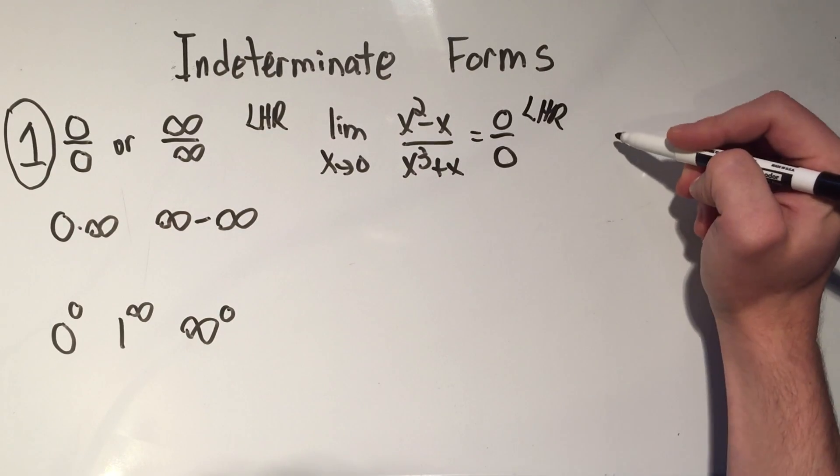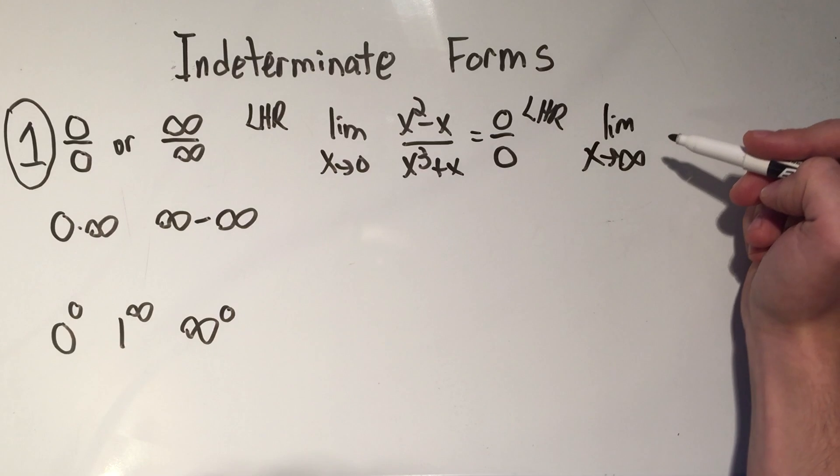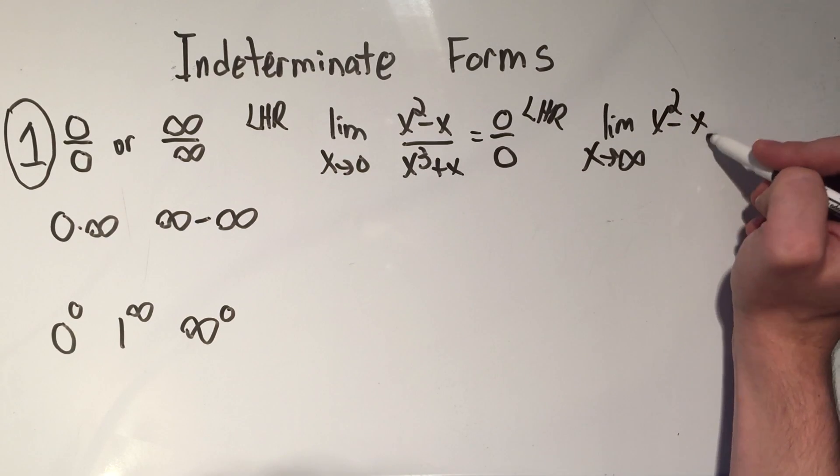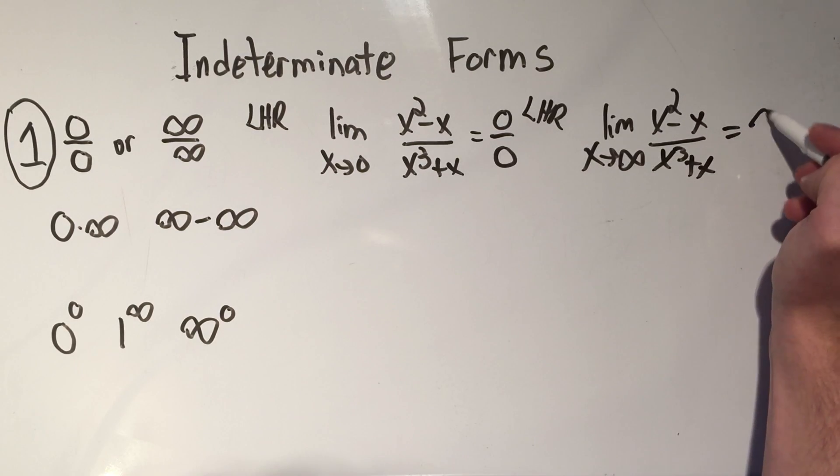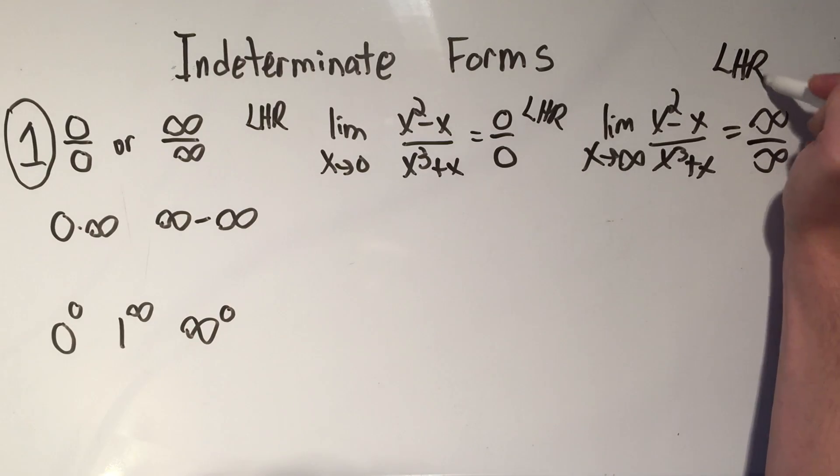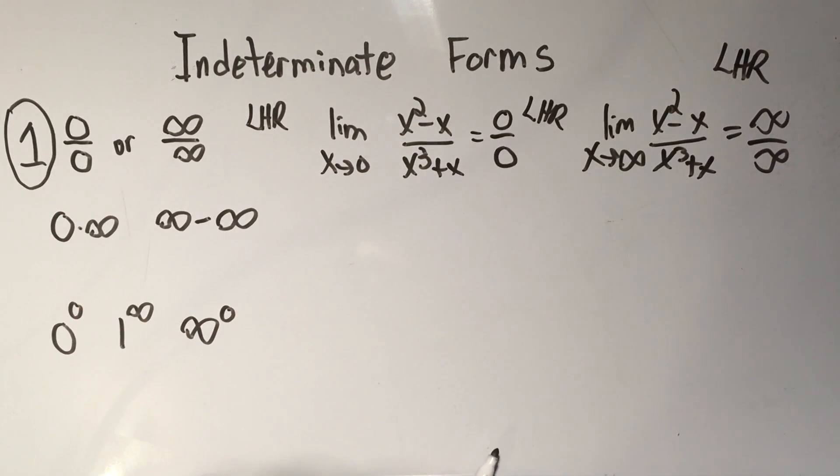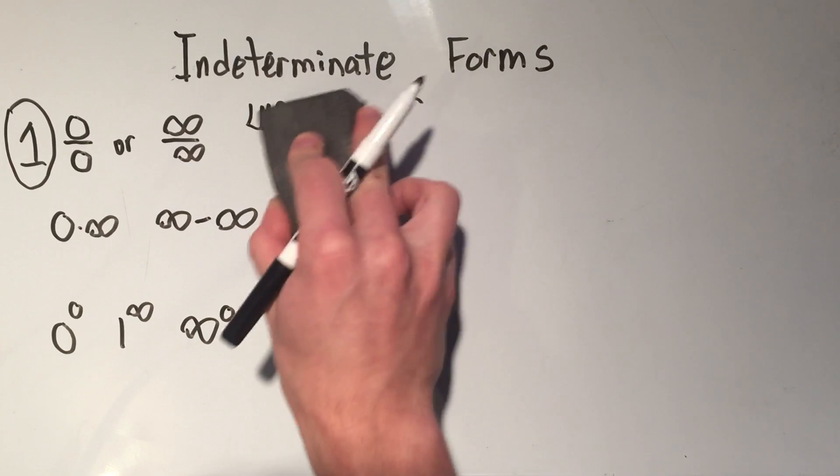Or you could have something where the limit's going to infinity and I could actually just use the same example here: (x² - x) over (x³ + x), and then you would get infinity over infinity and immediately you would just apply L'Hôpital's rule. So zero over zero or infinity over infinity, those are the easiest cases.